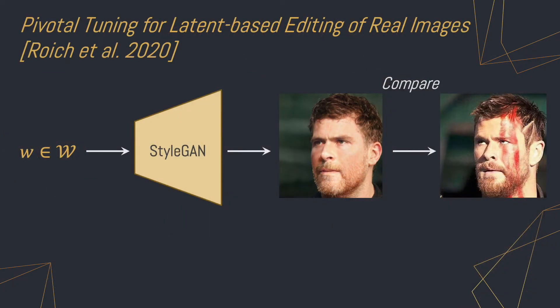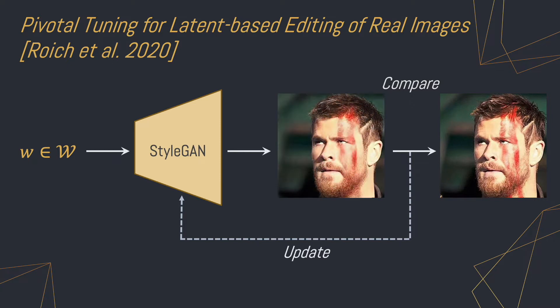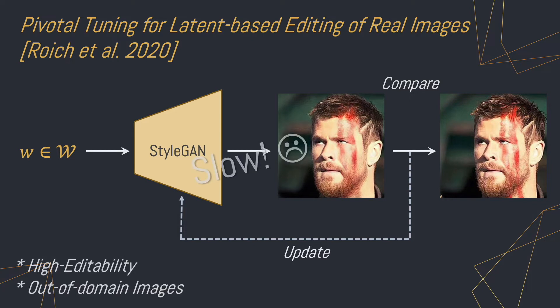More recently, Roich et al. presented PTI, a method that tackles the distortion-editability trade-off by tuning the pre-trained StyleGAN generator to inject new identities into the editable regions of StyleGAN's latent space. They first find an editable latent code in W that corresponds to an approximate reconstruction, like the one we see here. They then tune the generator weights so that this same latent code will result in an accurate reconstruction. The weight modifications are subtle, so latent editing still works well. But it's still an optimization process, which means it takes several minutes per image and isn't practical for many real applications.